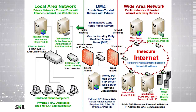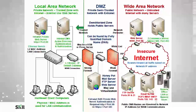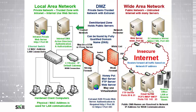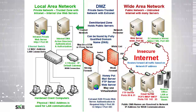In the DMZ we can have honey pots or honey nets, a mail server, an FTP server, and a web server — all of which could be virtualized so that they all operate on one physical machine. We then have a weaker firewall used to protect our DMZ from the wide area network or the insecure internet, and that location is known as our network perimeter.